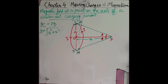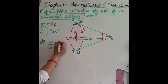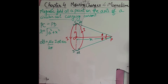Now, because of this current element I·dl, we can calculate how much magnetic field exists at point P using Biot-Savart's law. So here we apply: dB = (μ₀/4π) · (I·dl·sinθ) / r². The angle θ between the line element and position vector will be 90 degrees.